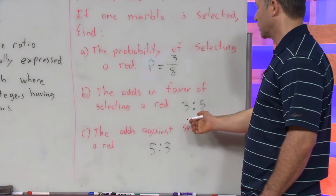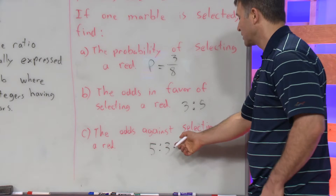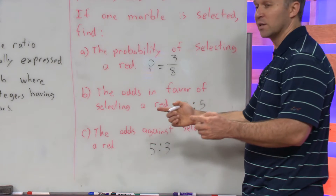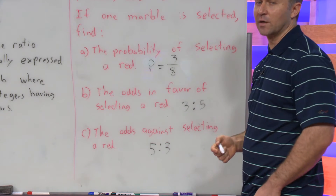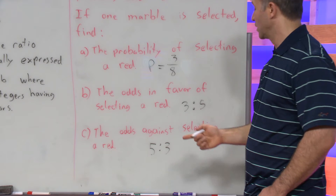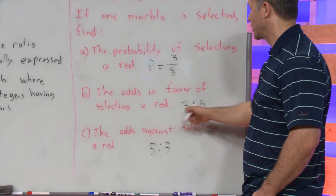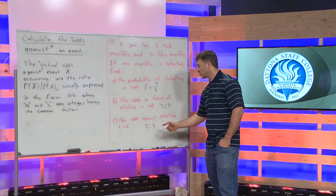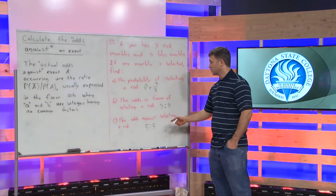Sometimes students ask: isn't the odds against just the same as odds in favor except the numbers are switched around? Yes, absolutely — it's that straightforward. If the odds in favor of selecting a red are three to five, the odds against selecting a red are going to be five to three. It is that straightforward.